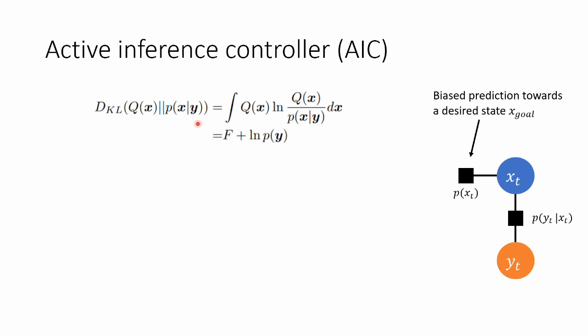So we want to compute p of x given y, but that's often expensive. So we approximate it with a variational distribution q of x, which we assume to be Gaussian. We want to find the Gaussian distribution that's close to the true distribution. The difference or mismatch is given by the so-called KL divergence, which is this term right here.